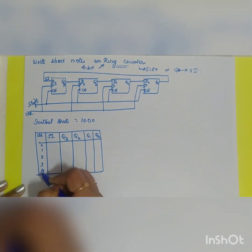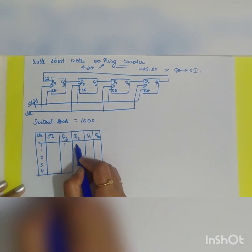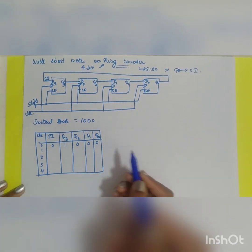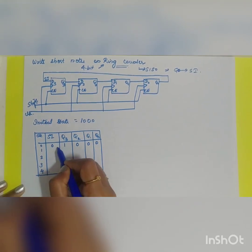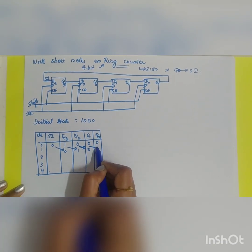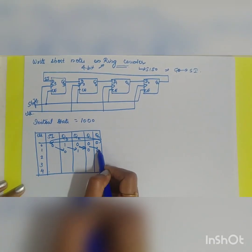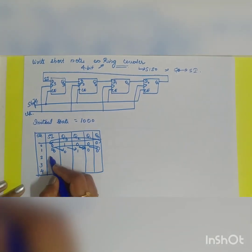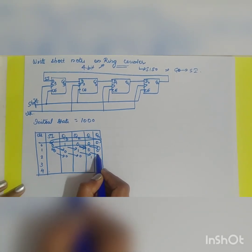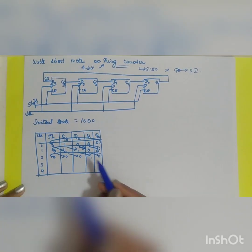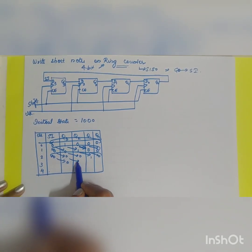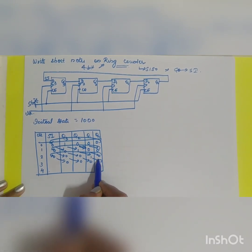Clock states: 0, 1, 2, 3, 4. The initial data is 1 0 0 0, so Q0 feeds back as the serial input. During the first clock pulse: 0 is shifted into Q3, 1 shifts to Q2, 0 to Q1, 0 to Q0 — giving 0 1 0 0. During the second clock pulse: 0 shifts to Q3, 0 shifts to Q2, 1 shifts to Q1, 0 to Q0 — giving 0 0 1 0.